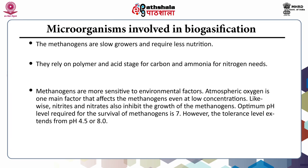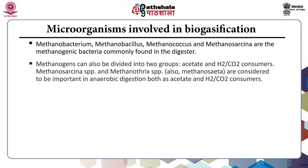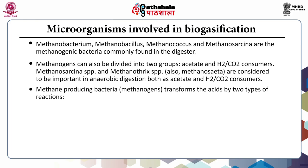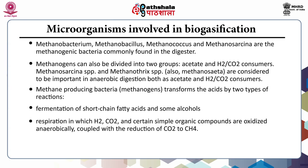The optimum pH level for the survival of methanogens is 7; however, they tolerate a pH range of 4.5 to 8. Some methanogenic bacteria include Methanobacterium, Methanobacillus, and Methanococcus species. Methanogens are divided into two groups: acetate consumers and hydrogen/carbon dioxide consumers. Methane-producing bacteria transform acids by two types of reactions: fermentation of short-chain fatty acids and some alcohols, and anaerobic respiration where hydrogen, carbon dioxide, and simple organic compounds are oxidized and coupled with reduction of carbon dioxide to form methane.